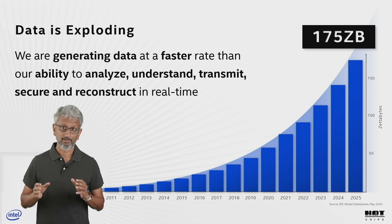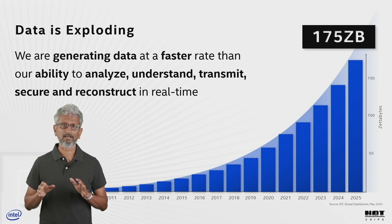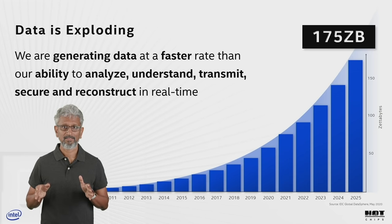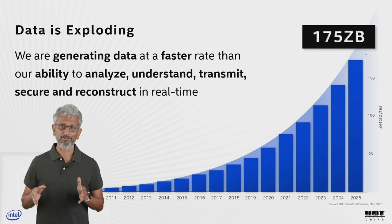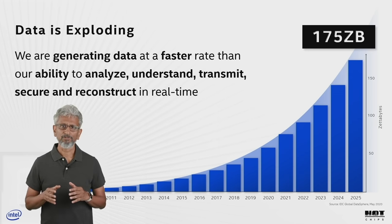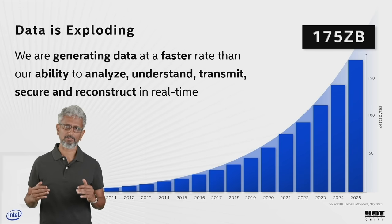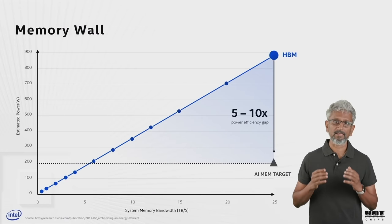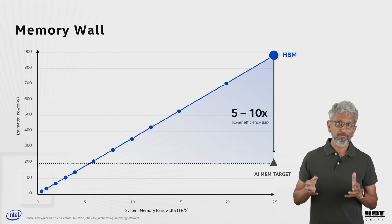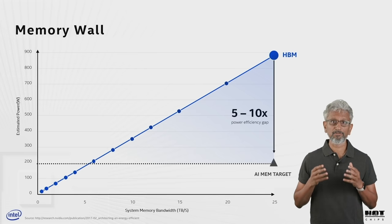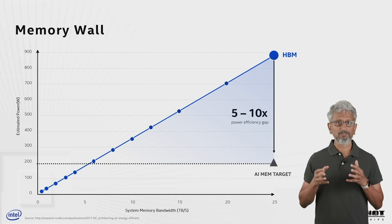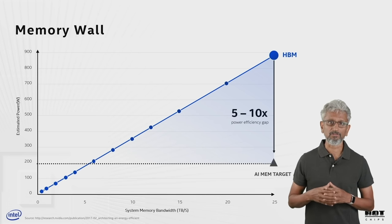One of the key breakthroughs in our progress on AI is data — leveraging data to build intelligence. We are generating more data than our ability to analyze and understand. Data not only stresses the need for more compute, it stresses our whole infrastructure. We need more capacity and bandwidth at every level of the memory hierarchy. We need network bandwidth to go up on exponential trajectories while reducing latencies as well.